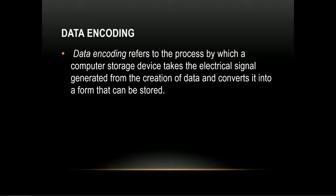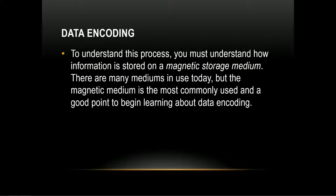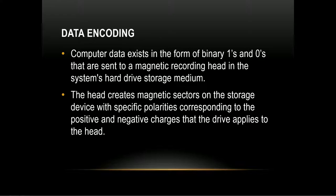Our first major area is data encoding. Data encoding refers to the process by which a computer storage device takes the electronic signal generated from the creation of data and converts it into a form that can be stored — normally an electrical signal converted to bits on a hard drive. To understand this, we need to know how data is stored on magnetic storage media and SSDs, primarily through binary: zeros and ones, or the application or absence of electricity forming a one or a zero.